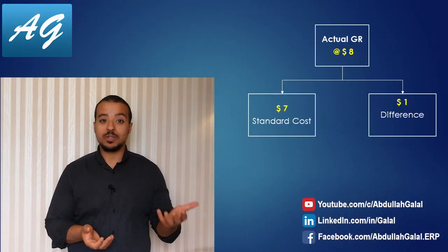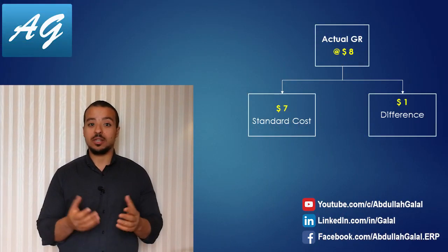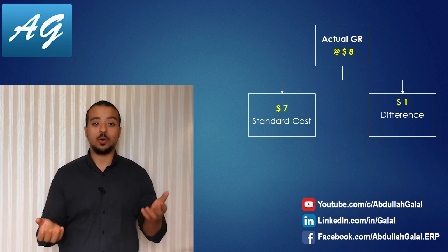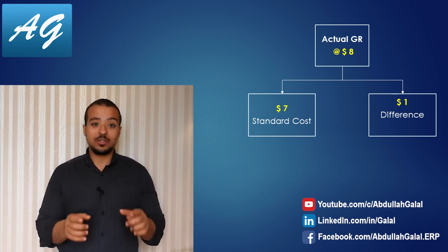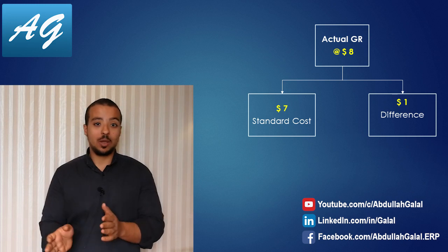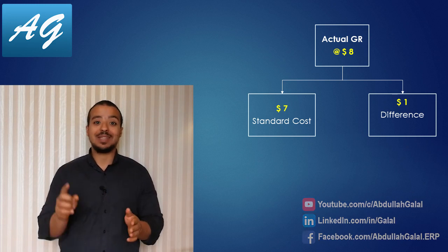How do we compare our actual results against our standard cost estimate? In order to do this, we have to evaluate any stock movement at standard cost. For example, our standard cost for that chair was 7 USD, but actually during the year we did some goods receipts at 8 USD instead of 7. So we have a difference of 1 USD between our standard and our actual. The amount posted to our inventory account that will appear in our balance sheet is going to be at 7 USD.